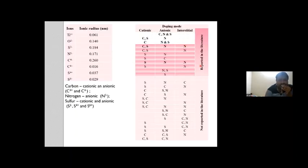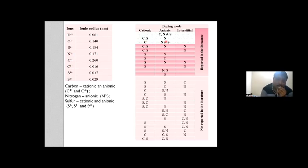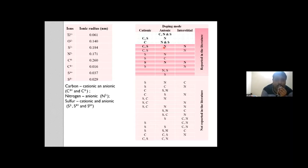Sulfur can exhibit three different oxidation states: S2-, S4+, and S6+. Carbon exists in both anionic and cationic forms, and nitrogen exhibits only in the anionic form. The first report came from Wuhan University of Science and Technology in 2008 — the only report with information on the simultaneous doping of carbon, nitrogen, and sulfur in ionic states. The rest are combinations where carbon and sulfur are cationic and nitrogen is anionic, or nitrogen occupies both interstitial and anionic sites — what we call dual doping mode.